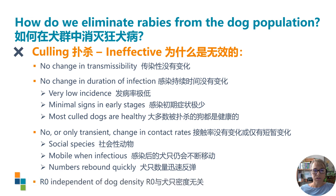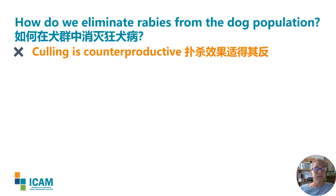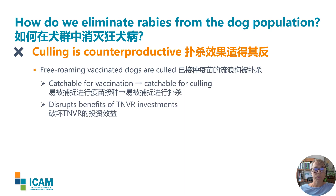Dogs also have a remarkable ability to replenish their numbers after culls. Together, these factors lead to the finding that rabies is independent of dog density — it persists with a fairly consistent R0 across a wide range of free-roaming dog densities. Culling is also counterproductive when used following a vaccination campaign: the dogs catchable for vaccination are also catchable for culling. When culls are used in the same locations as TNVR programmes, they disrupt the benefits invested in by TNVR organisations — for instance, where unregulated individuals or property management companies poison or trap strays already sterilised and vaccinated, which is a terrible waste of resources and counterproductive to disease control.